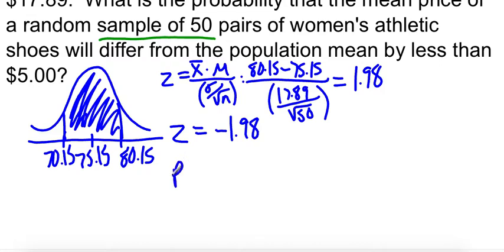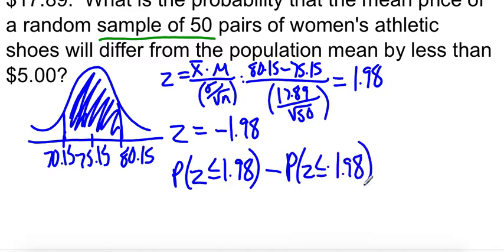So we're going to find the area below 1.98 and then we'll subtract the area below negative 1.98. So if you're using the table, this is the method that you have to do. You're finding the area from here down, and then you're subtracting from here down. And that will give you that part in the middle. At 1.98, we get 0.9761. And at negative 1.98, we get 0.0239. And we subtract those, 0.9522.